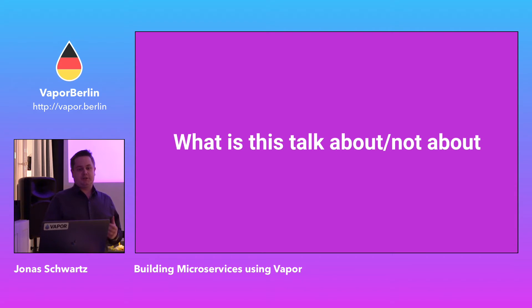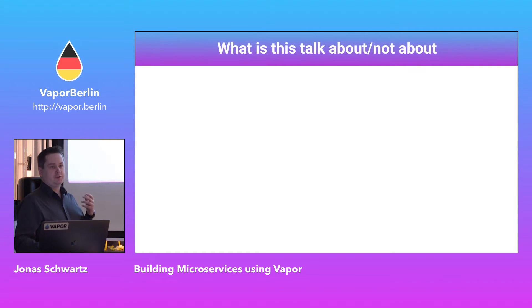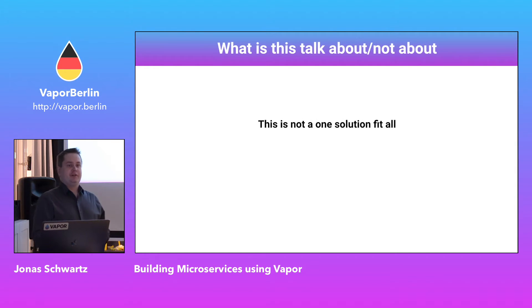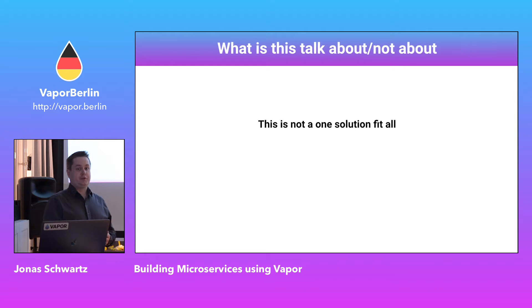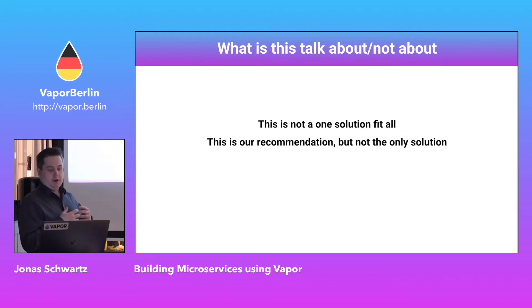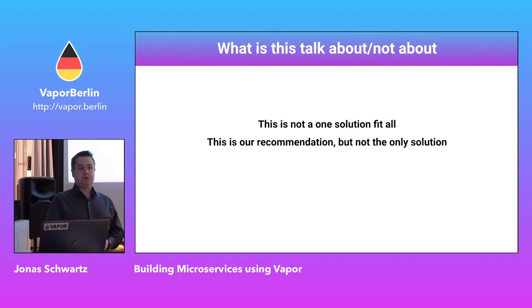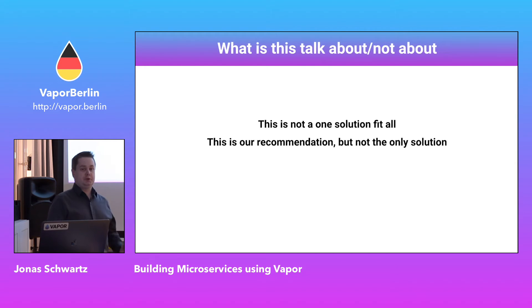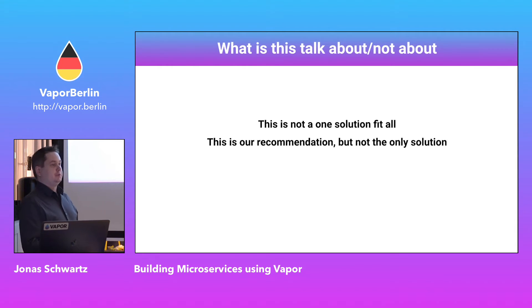I want to quickly talk about what this talk isn't about. This isn't a one-solution-fits-all. This is the work of me and Tanner sitting together here in Berlin for three weeks trying to figure out what we think is the best way to do microservices. It's our recommendation, but not the only solution. If you try to Google how to build microservices, you get tens of thousands of different approaches, most of them using Node.js. This is what we feel is best suited for building with Vapor, because of its internal architecture.